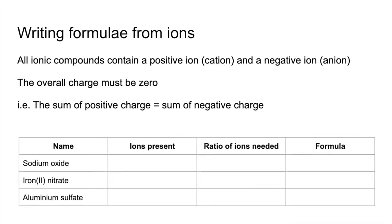So we're going to look at these three examples here. So we'll look at the ions that are present, the ratio of ions needed to give an overall charge of zero, and then the formula. So sodium oxide, the ions present are Na plus and O2 minus. So you can see one of each of those is not going to give an overall charge of zero. So we need two Na plus ions for every O2 minus ion. And so the formula reflects that. It's Na2O.